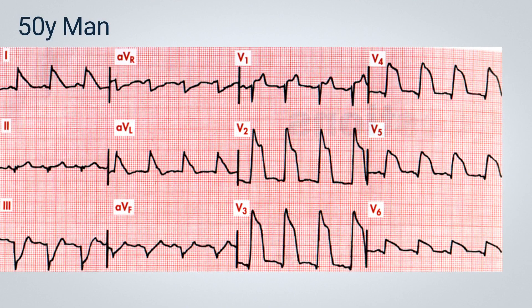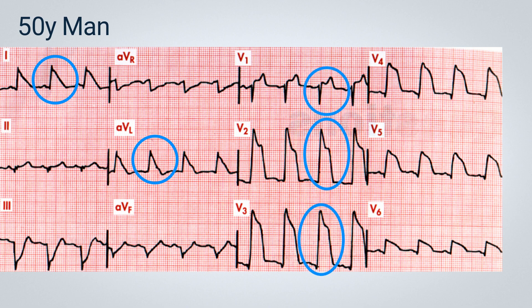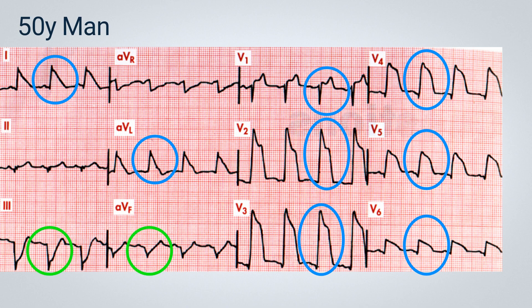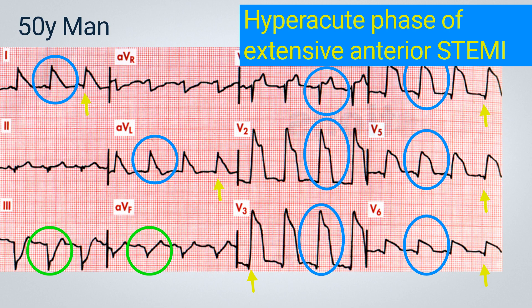The second electrocardiogram features a 50-year-old male patient. I suggest pausing the video to carefully analyze the ECG before I begin discussing it in detail. What immediately stands out in this ECG is the significant ST segment elevation in the lateral leads D1 and AVL, as well as throughout the anterior leads from V1 to V6. In addition, we can see ST segment depression in the inferior leads, particularly D3 and AVF. Alongside this, we can observe the early stages of a Q wave, which becomes more visible in leads V4 to V6. These findings lead us to diagnose the hyperacute phase of an extensive anterior acute myocardial infarction. We can clearly see that the Q wave indicative of areas of necrosis is beginning to form, accompanied by extremely elevated ST segments and a mirrored image in the inferior wall.